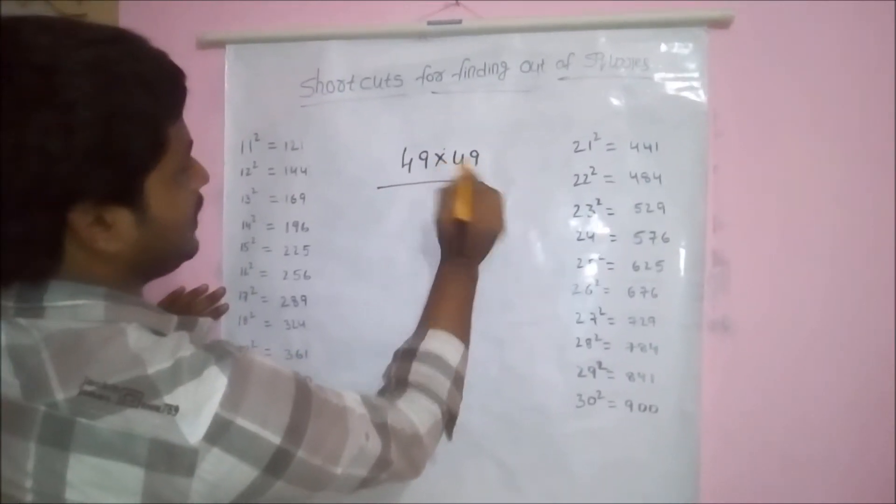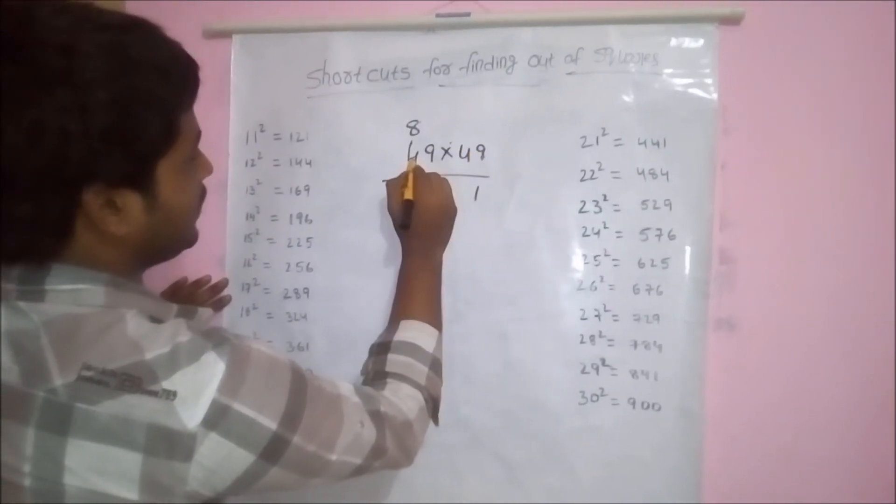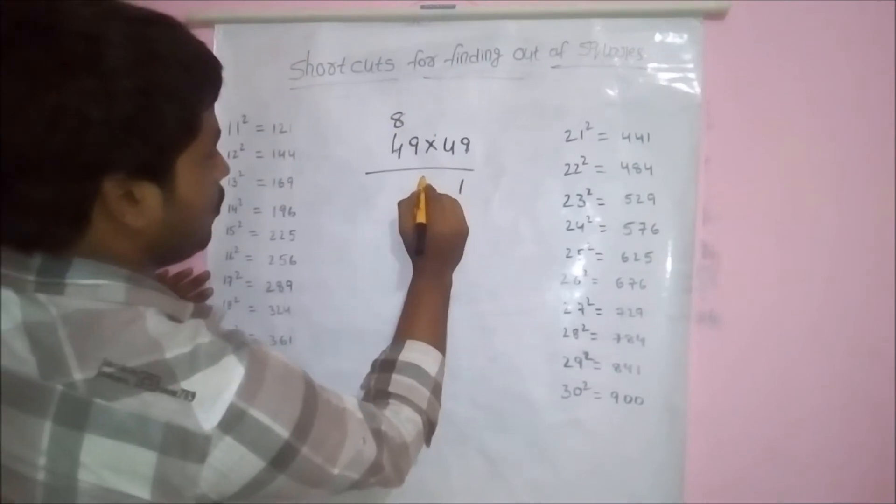Here, for the general method, we have to multiply unit digits first. First, 9 nines are 81, carry 8. 9 fours are 36, 36 plus 8, 44.